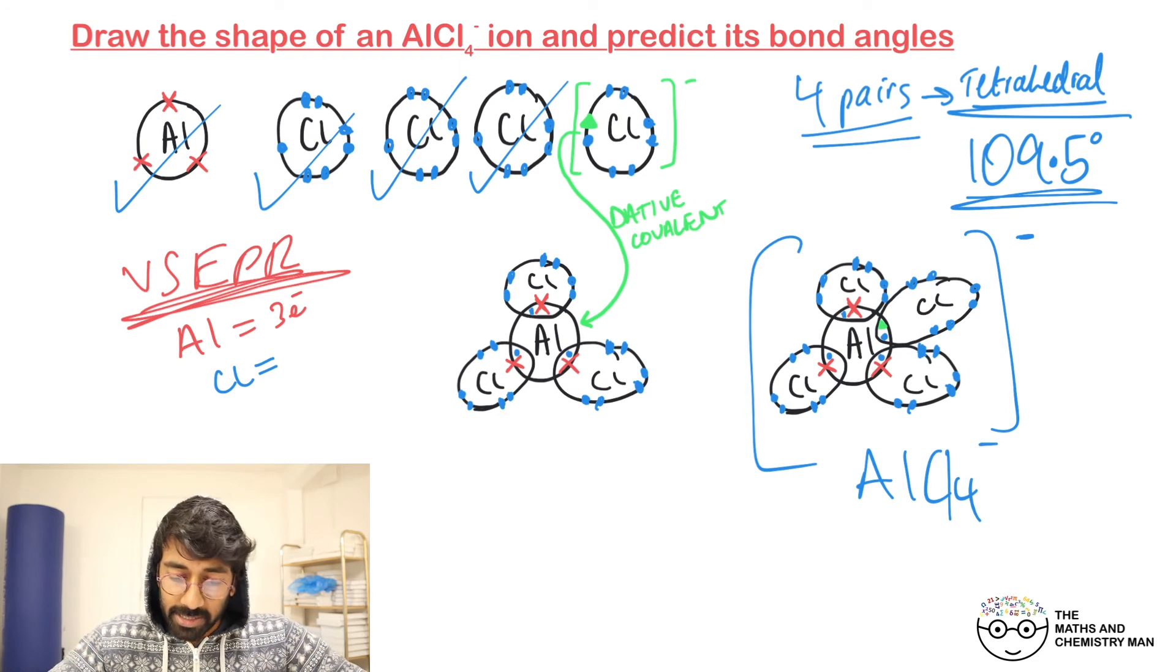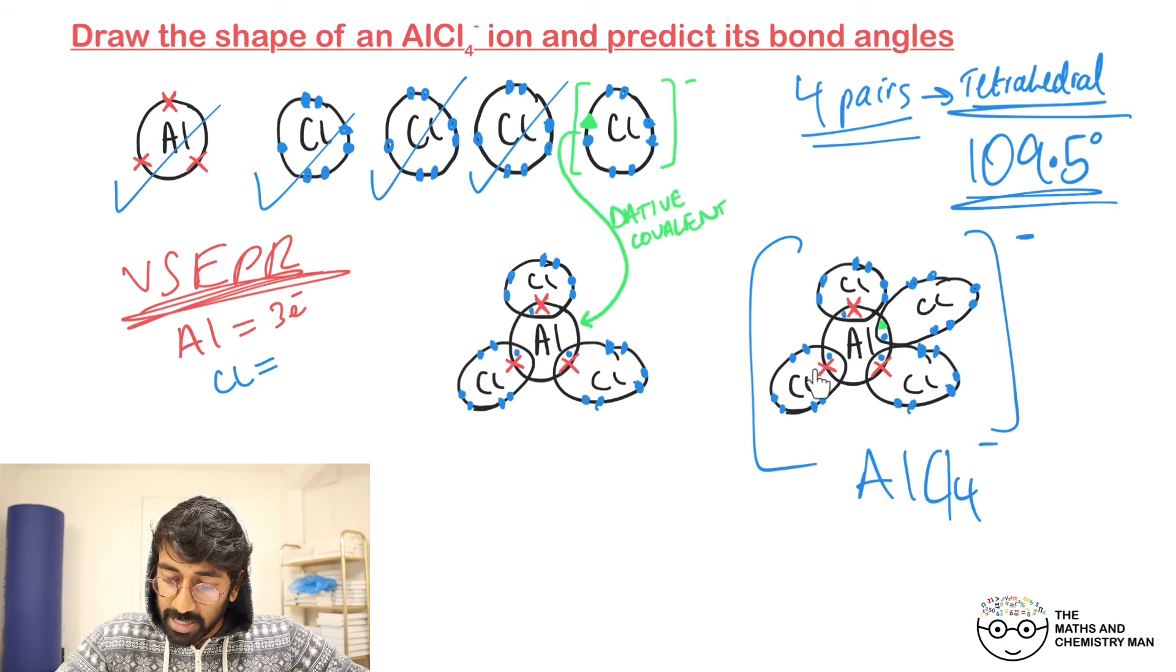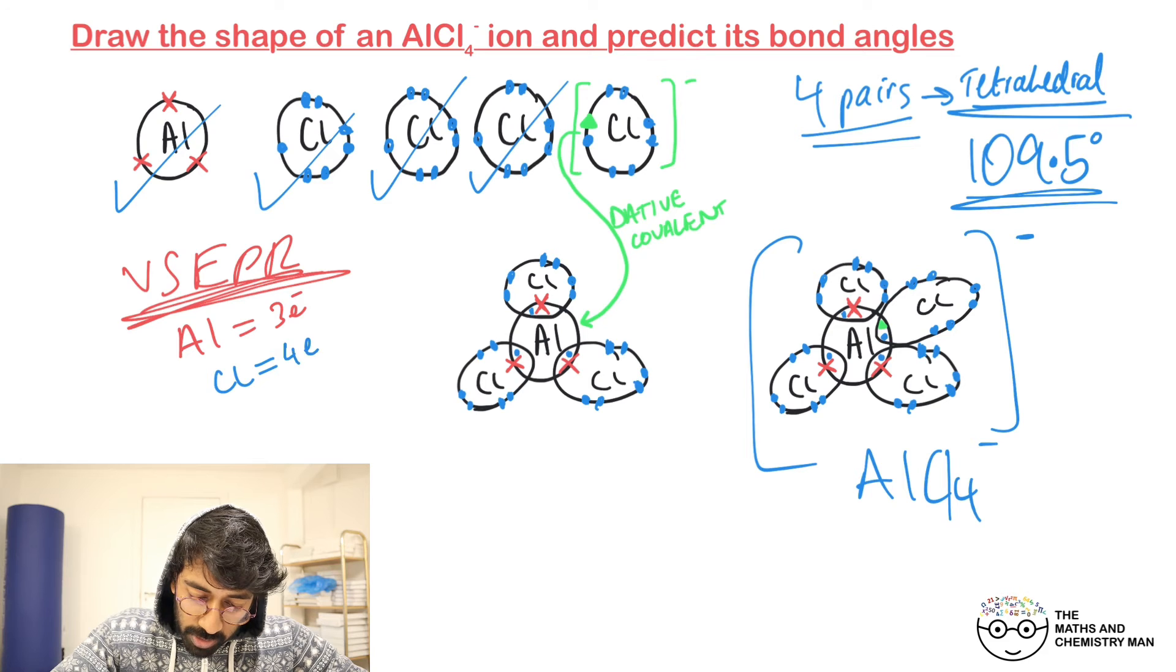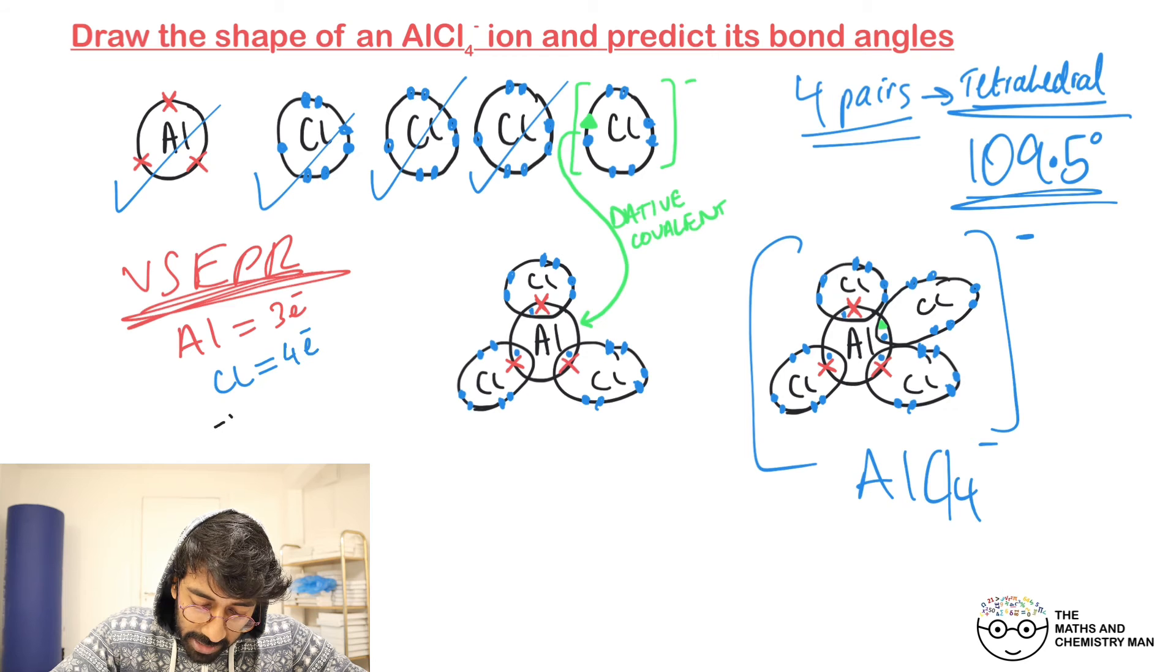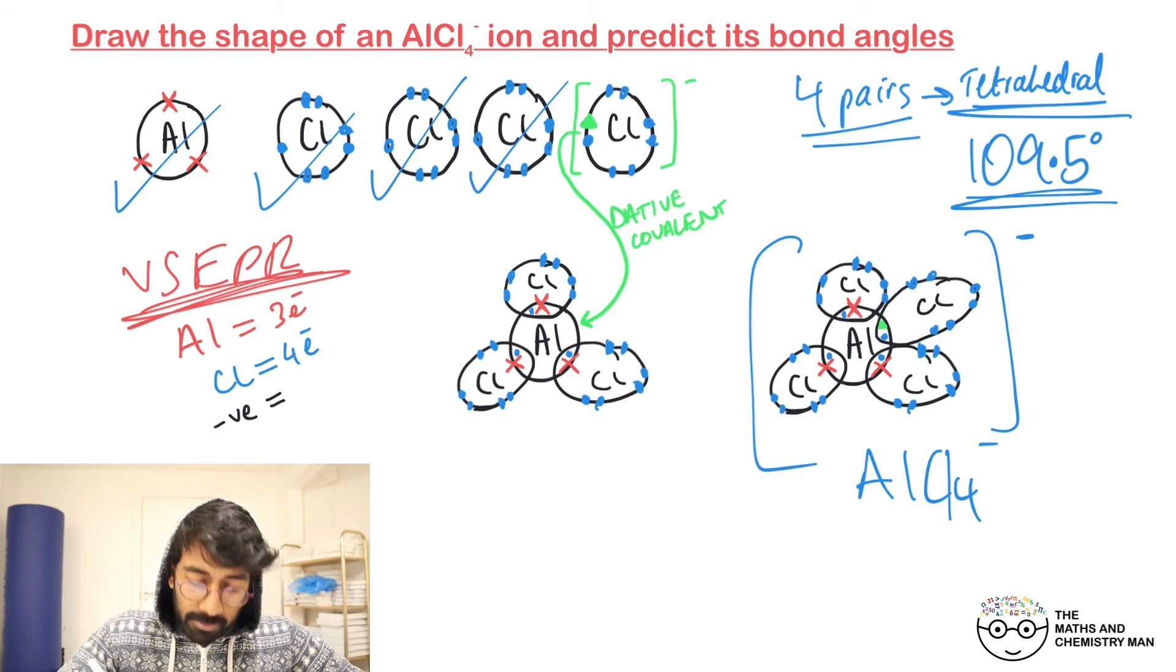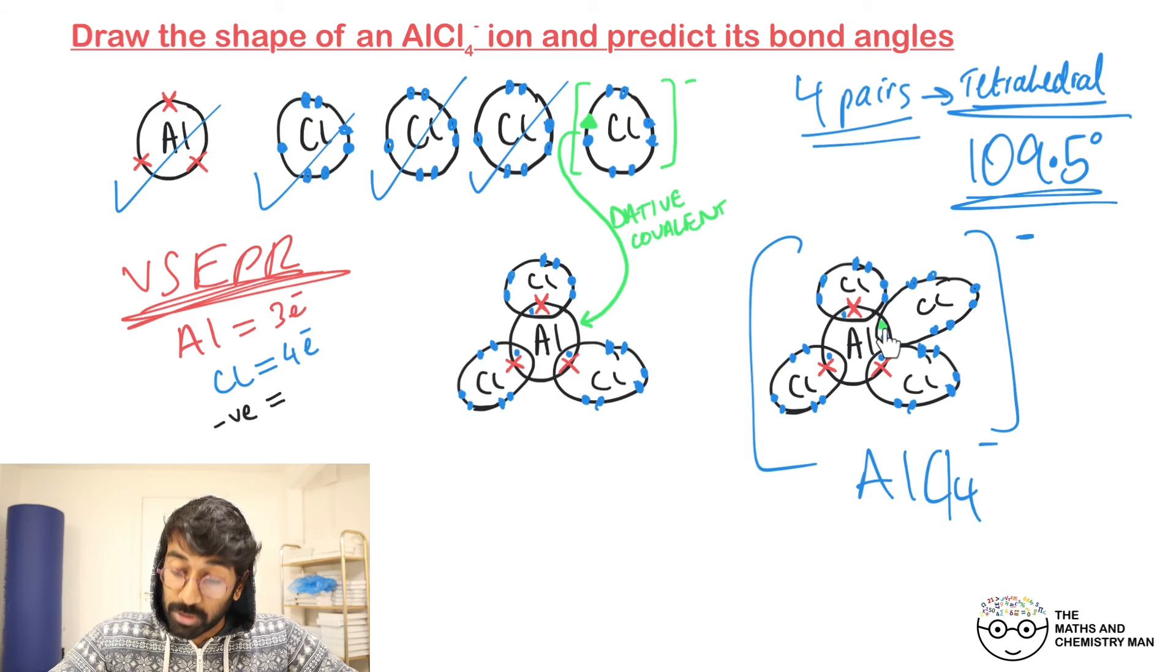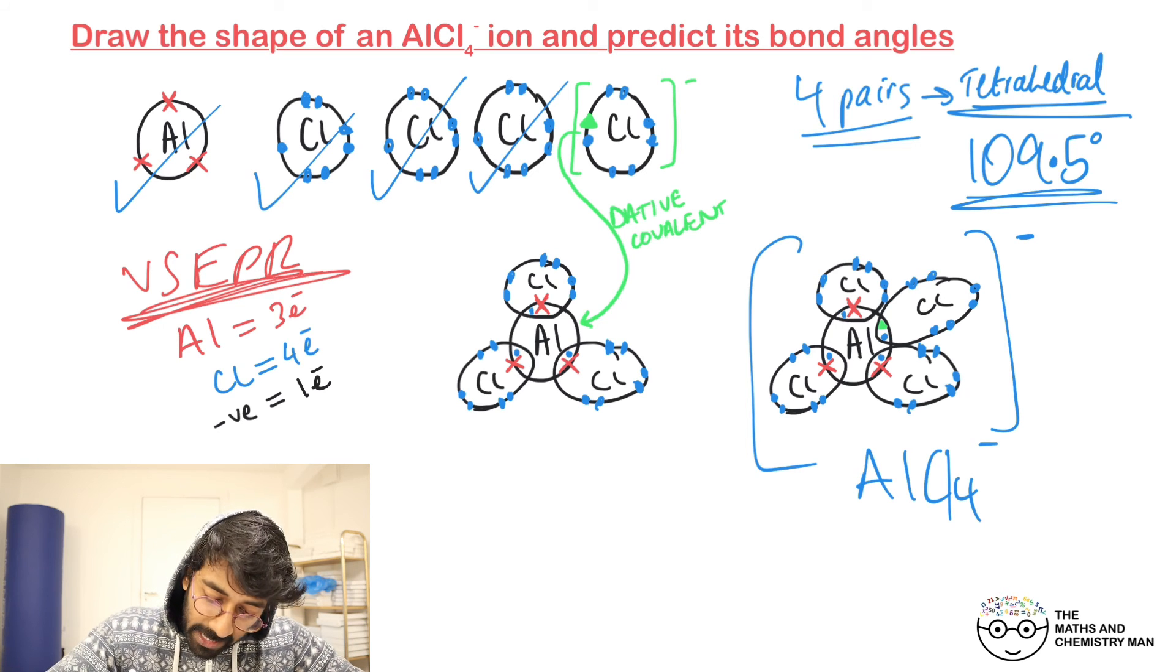On the aluminium atom, it's got three electrons. The chlorines - each of them supplied one electron each, so they've contributed four electrons in total. Now because we've also got a minus charge, there was actually one more electron popped in - that green triangle. So there was one more electron contributed here.